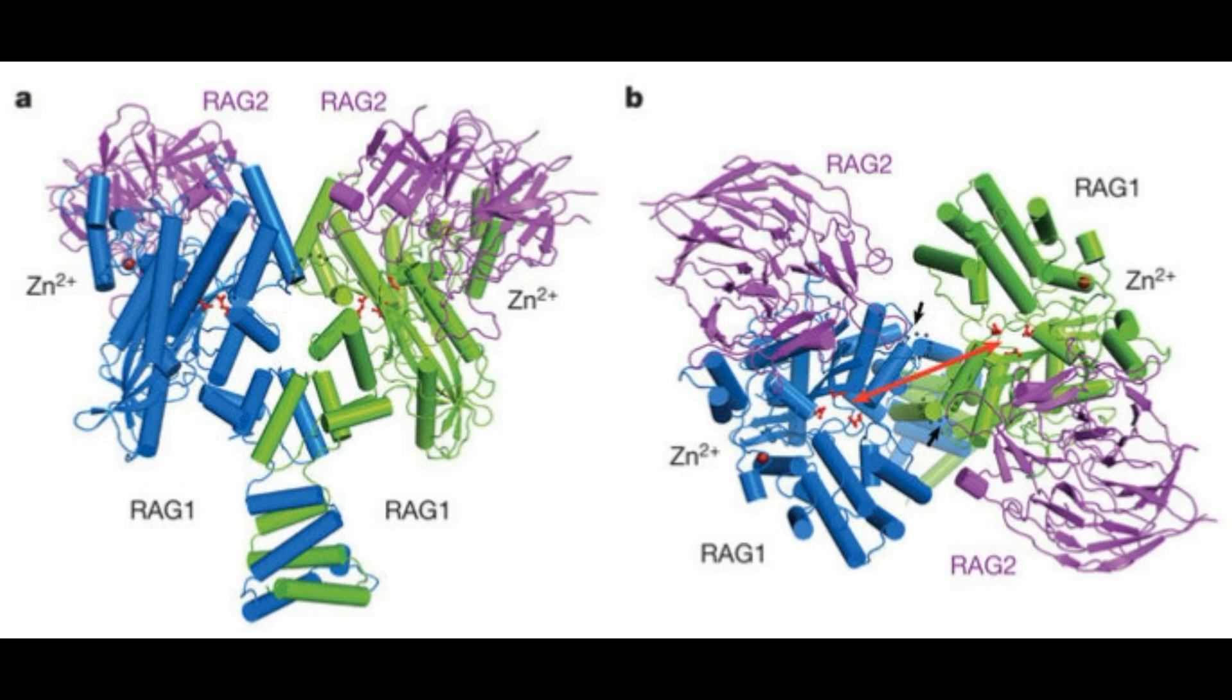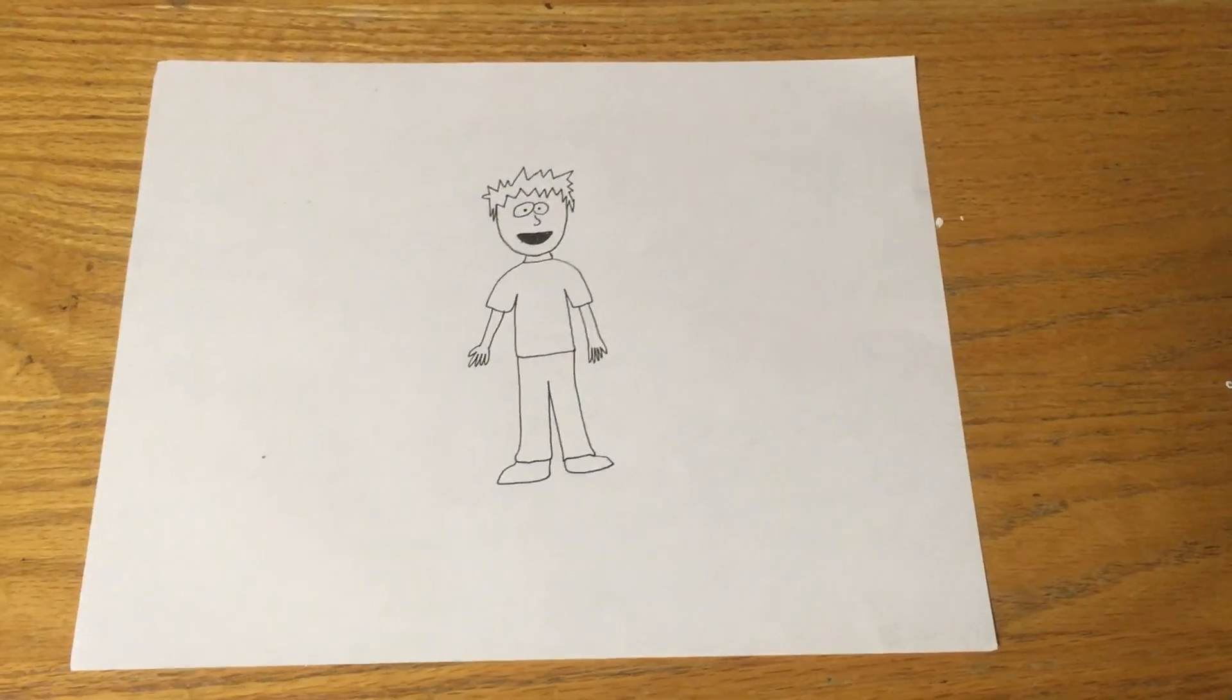So, in conclusion, RAG proteins are essential to maintaining the diversity of our immune system and keeping us happy and healthy.